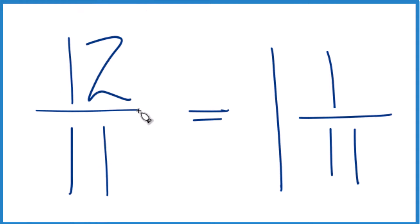So that's it. This is Dr. B looking at 12 elevenths, converting it to a mixed number. The answer: 1 and 1 eleventh. Thanks for watching.